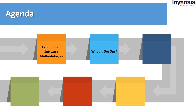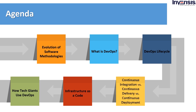Then we will look into what is DevOps, how companies are benefited by implementing it, what are the different phases of the DevOps lifecycle and what tools are used. We will differentiate between continuous integration, delivery, and deployment, and understand what infrastructure as code means in DevOps. Finally, we'll finish by understanding how tech giants use DevOps in their software applications.